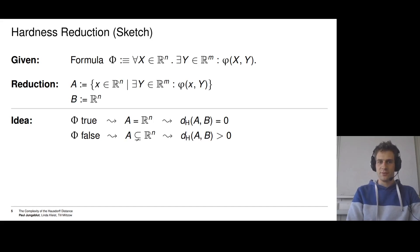On the other hand, if Φ is false, then there is at least one x for which there is no y. Thus, A is a strict subset of ℝⁿ, and A and B are different, and we hope that their Hausdorff distance is greater than 0. So this is the idea of the reduction, and this is how we think about it and how you should think about it.